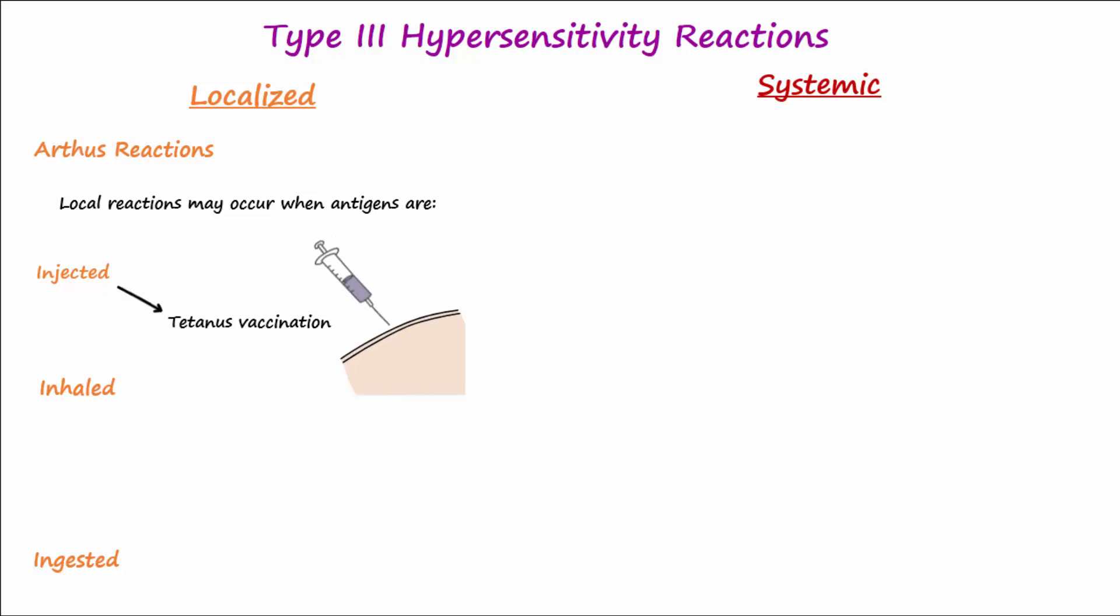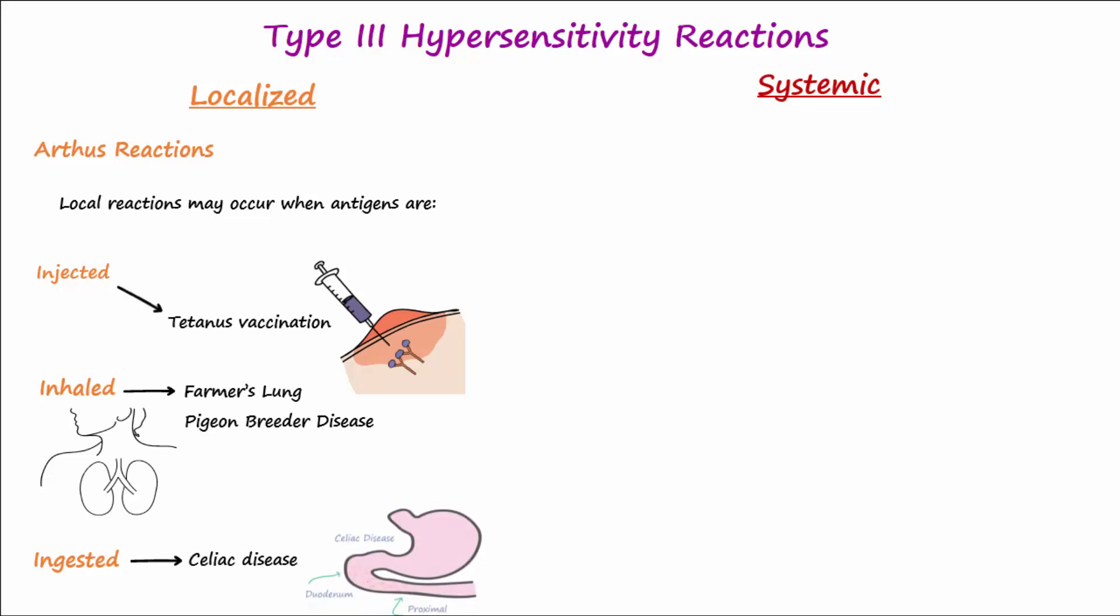Certain inhaled antigens can cause localized Type 3 hypersensitivity reactions in the alveoli of the lungs. Examples include farmer's lung and pigeon breeder disease. Ingested substances like gluten can cause celiac disease or gluten-sensitive enteropathy in susceptible individuals.